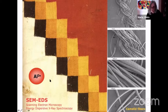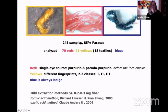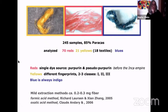We collected 245 samples, most of them from the Paracas, and we had 70 reds, 21 yellows, and also blues. Blues is always indigo. Yellows - it's always very interesting to see that we have several plant sources for the yellows, but a single source for the reds. We only detected purpurine and pseudopurpurine.